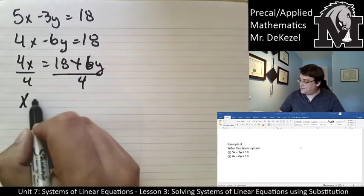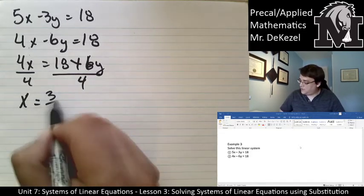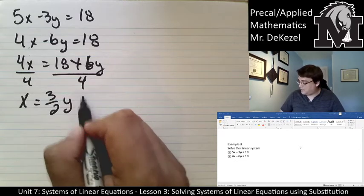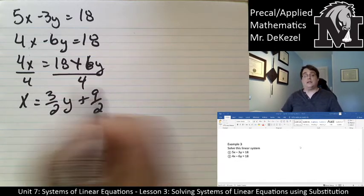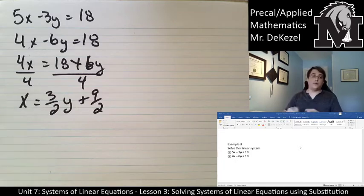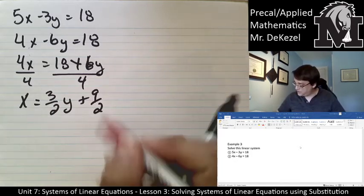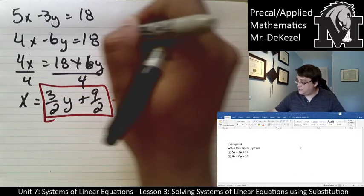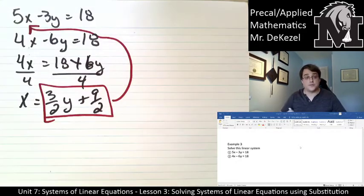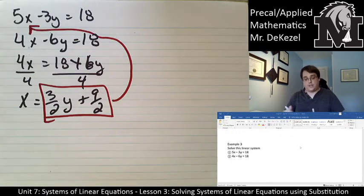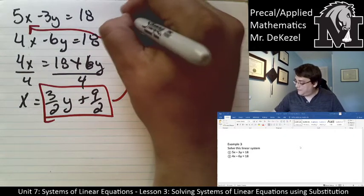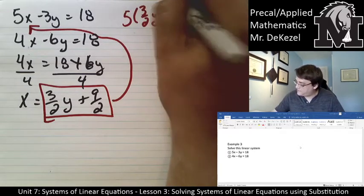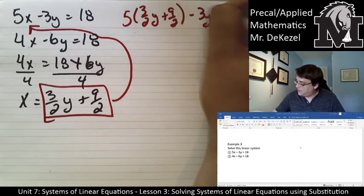I am then going to divide everything by 4. So I'd have x is equal to 3/2 y and then 18 divided by 4, that's not nice either. So that's plus 9/2. Kind of ugly, but we love fractions in this house. So we're going to then take this portion of it and plug it into our other equation for x. So it goes right there. So we have 5 times (3/2 y plus 9/2) minus 3y equals 18.